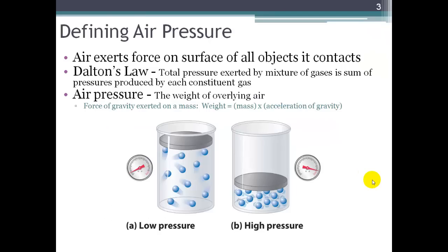Air pressure is essentially the weight of the overlying air. Dalton's Law basically says that the total pressure exerted by a mixture of gases, such as our atmosphere, is the sum of the pressures produced by each of the constituent gases. So if we break the atmosphere down into its constituent components like water vapor, nitrogen, and oxygen, we can look at the individual pressure exerted by each of those gases and simply sum them up to get a total for the atmosphere.